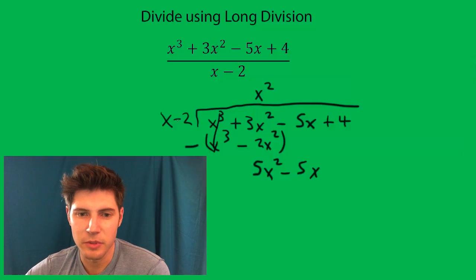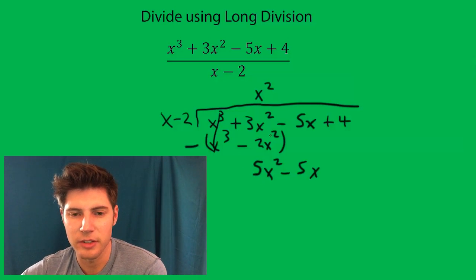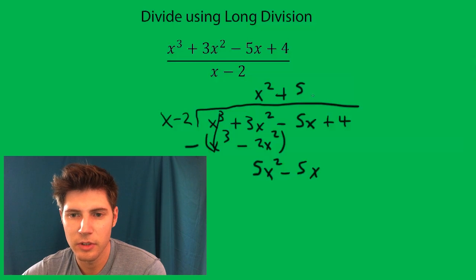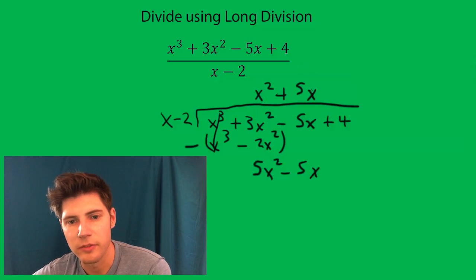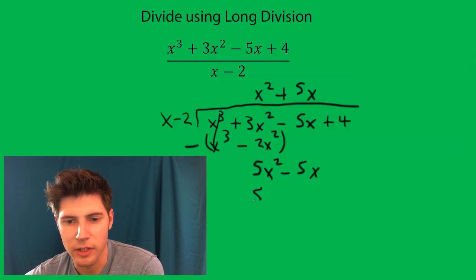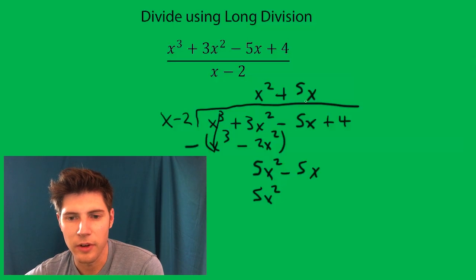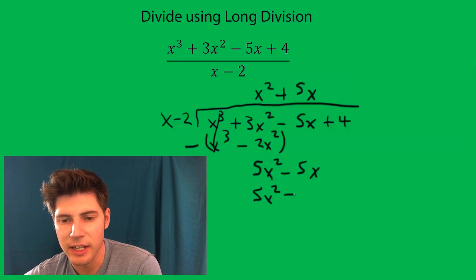Now same thing, how many times does this go into here? Well it goes in positive 5x times. So then we multiply: 5x times x is 5x squared and 5x times negative 2 is negative 10x.